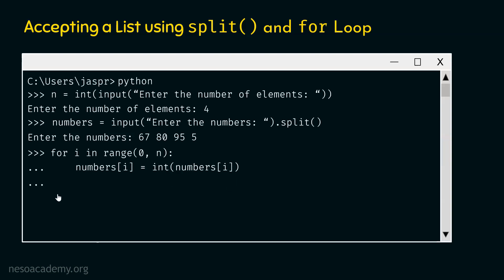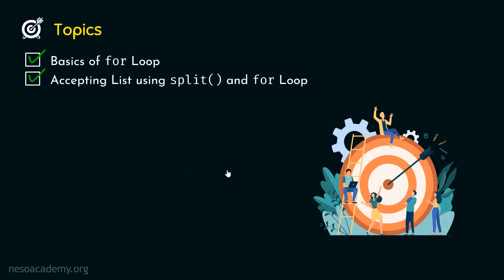Let's hit enter and hit enter again. Let's type numbers to see whether the numbers variable has received the list of integers. Let's hit enter. We get the list with a total of 4 items: 67, 80, 95, and 5 — and now these items are integers and not strings. With this, we have understood how to accept a list using split and for loop. Thank you for watching this presentation. I will see you in the next one.